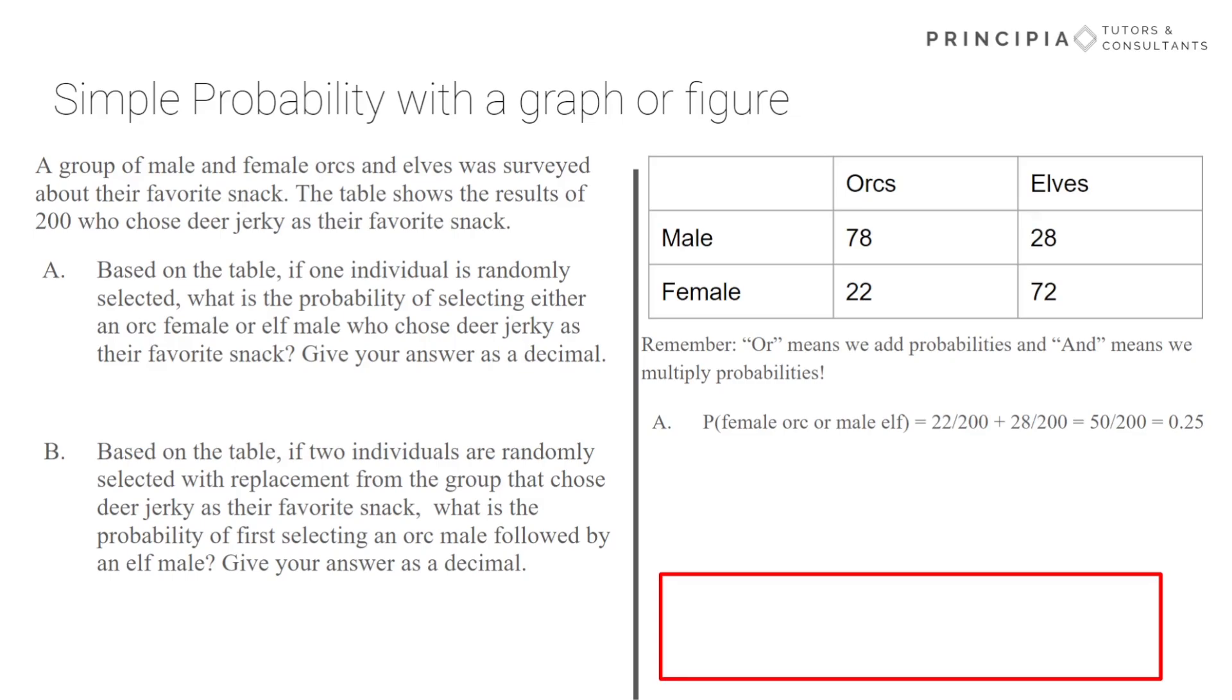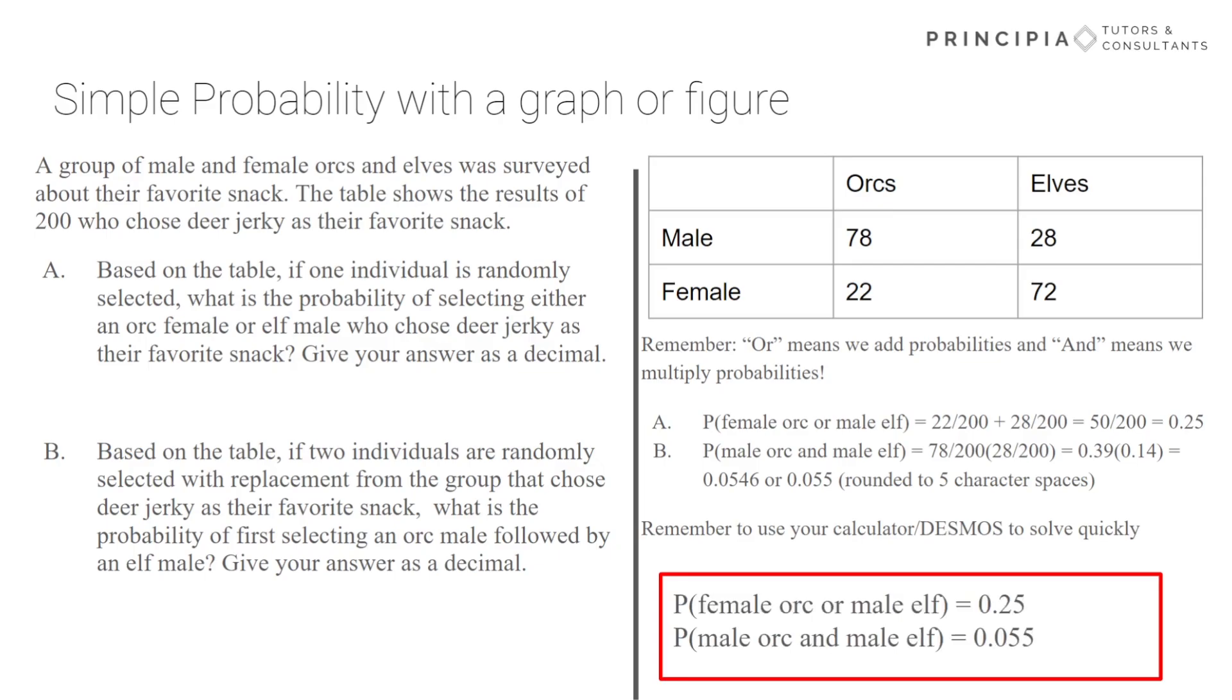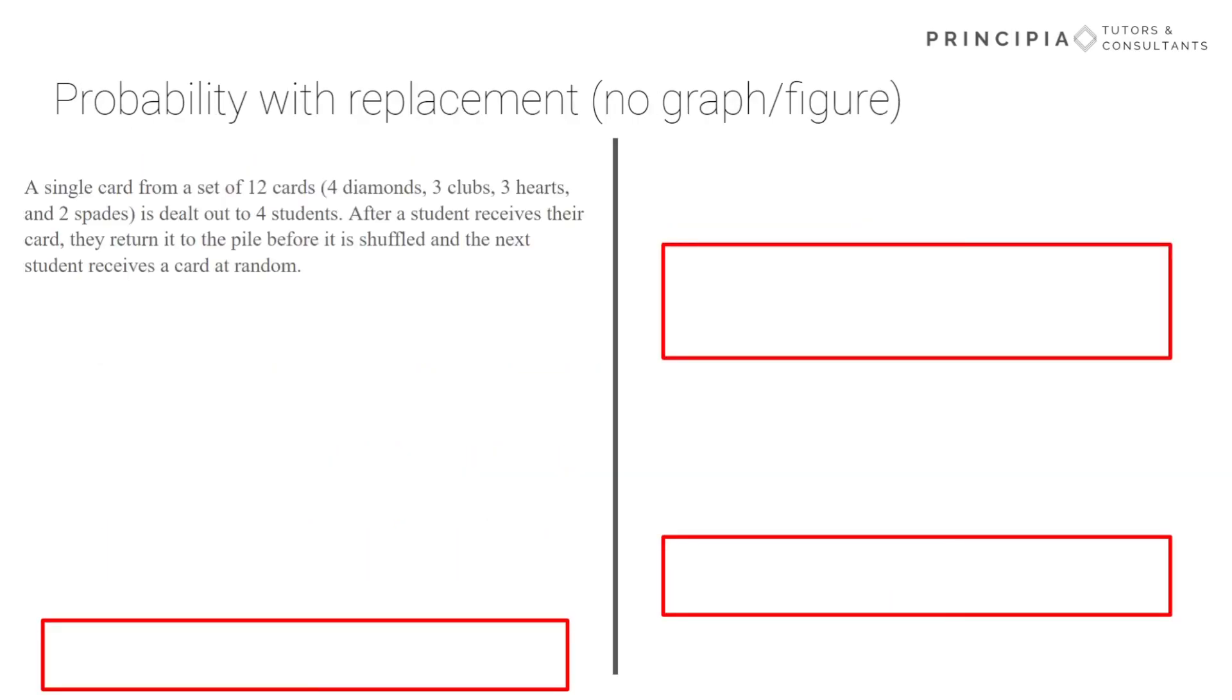For part B, it says 'and'. It wants us to first select the orc male, and then the male elf. So the 'and' lets us know we need to multiply the probabilities. Orc male is 78 over 200. Elf male is 28 over 200. Multiplying them out, our answer would round to 0.055 to account for the five character spaces that you would be given on a written question. And remember to use your calculator or Desmos to solve quickly.